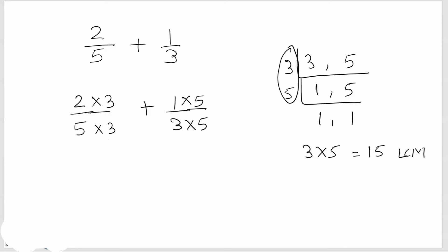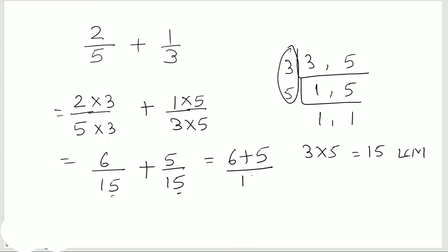So this is now: 2 times 3 is 6, over 5 times 3 is 15. And 1 times 5 is 5, over 3 times 5 is 15. Now we have the same denominator, so we just add the numerators: 6 plus 5, and keep the denominator as it is. So this gives me 11 over 15.